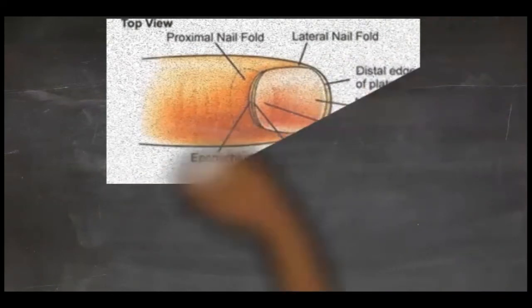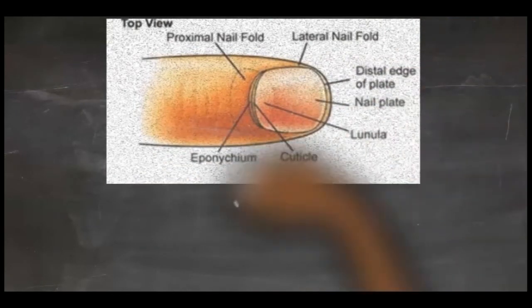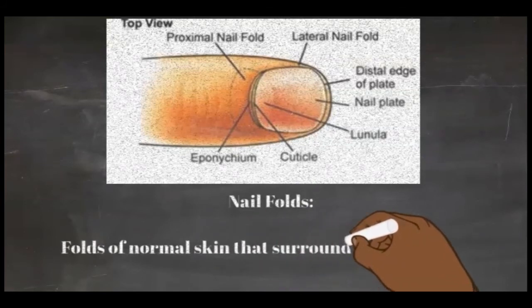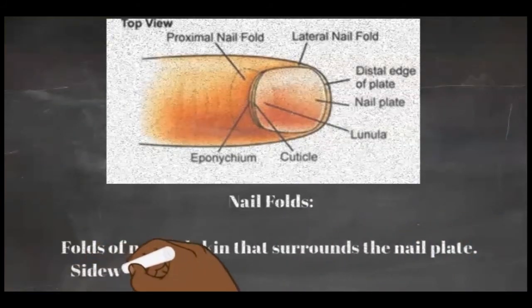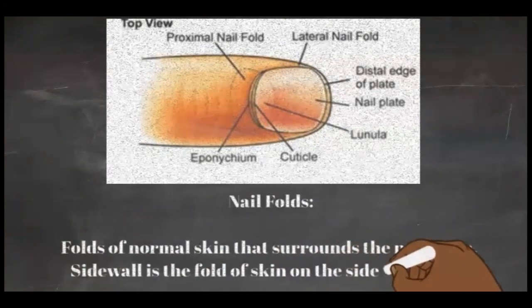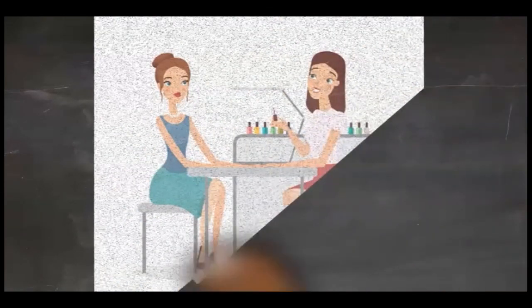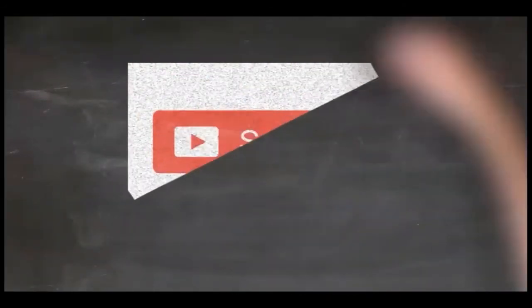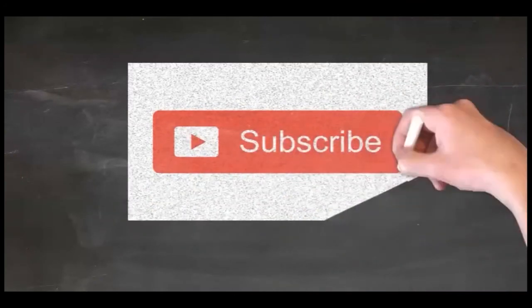The nail folds are folds of normal skin that surround the nail plate. These folds form the nail groove or furrow on each side of the nail. The side wall, also called the lateral nail fold, is the fold of skin overlapping the side of the nail. After learning these terms, I hope you have a better understanding of nail anatomy, its parts, and its functions. This information is guaranteed to make you a better nail technician — don't forget to subscribe, hit like, and I'll see you next time!